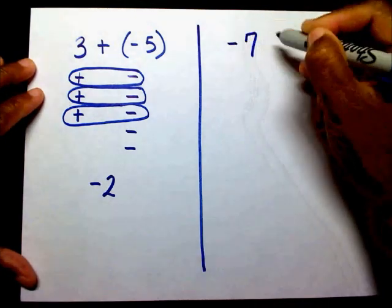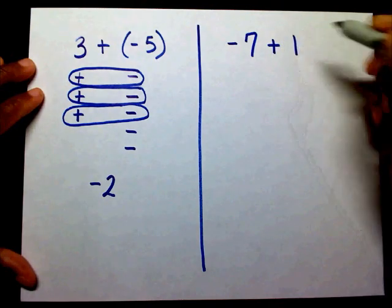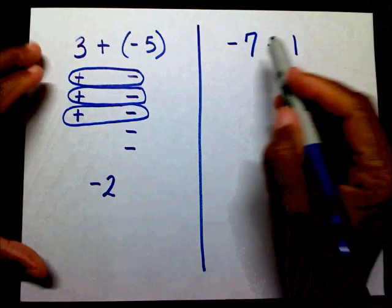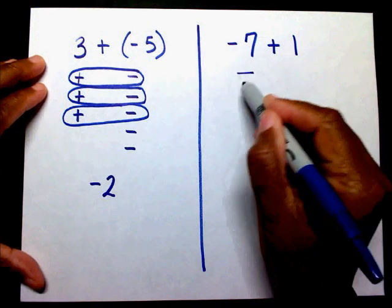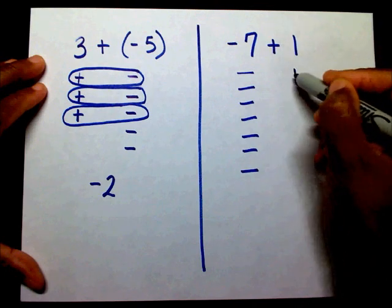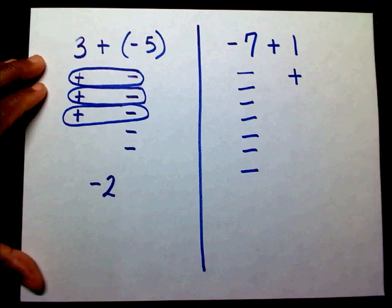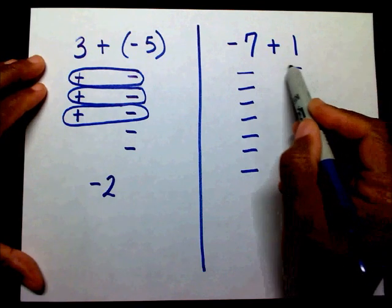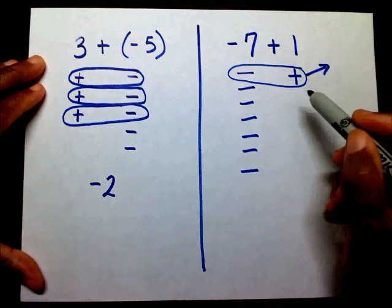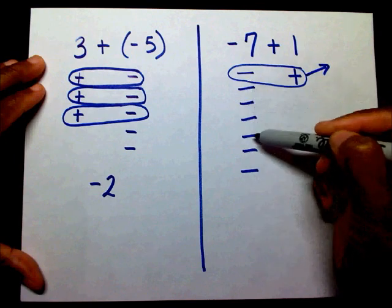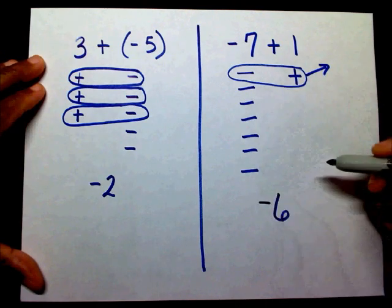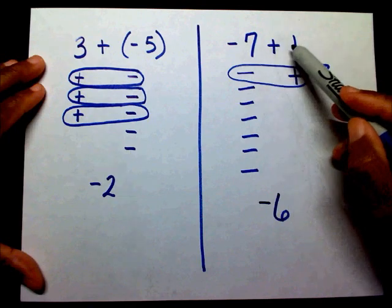Next problem: negative seven plus one. Again, when I add objects I combine them, so I'm going to show my seven negatives and I'm going to add to it one positive. Well, how many zero pairs can I create? I can only create one zero, and this zero is going to go away. That's going to leave me with one, two, three, four, five, six — but those six are negative. So the answer to negative seven plus one is negative six.